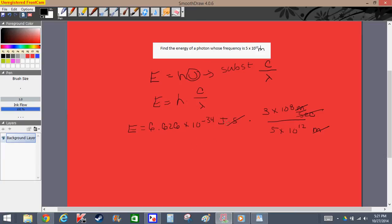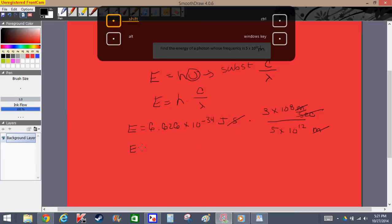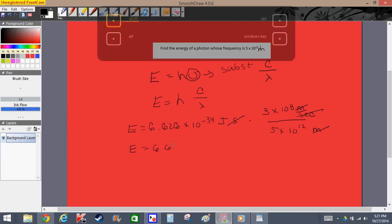We can simplify this a little bit. 3 divided by 5 is 0.6. Subtract the exponents: 10 to the negative 4th. This is the same thing as 6, so we made this larger, which means we have to make the exponent smaller: times 10 to the negative 5th. Now we bring down 6.626 times 10 to the negative 34th joules.